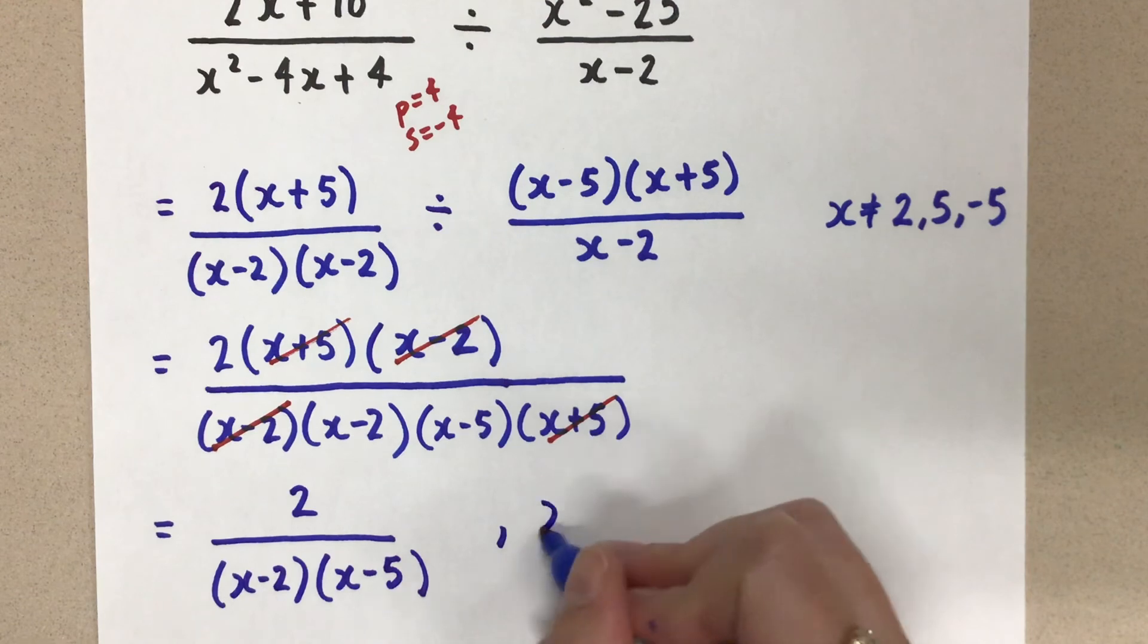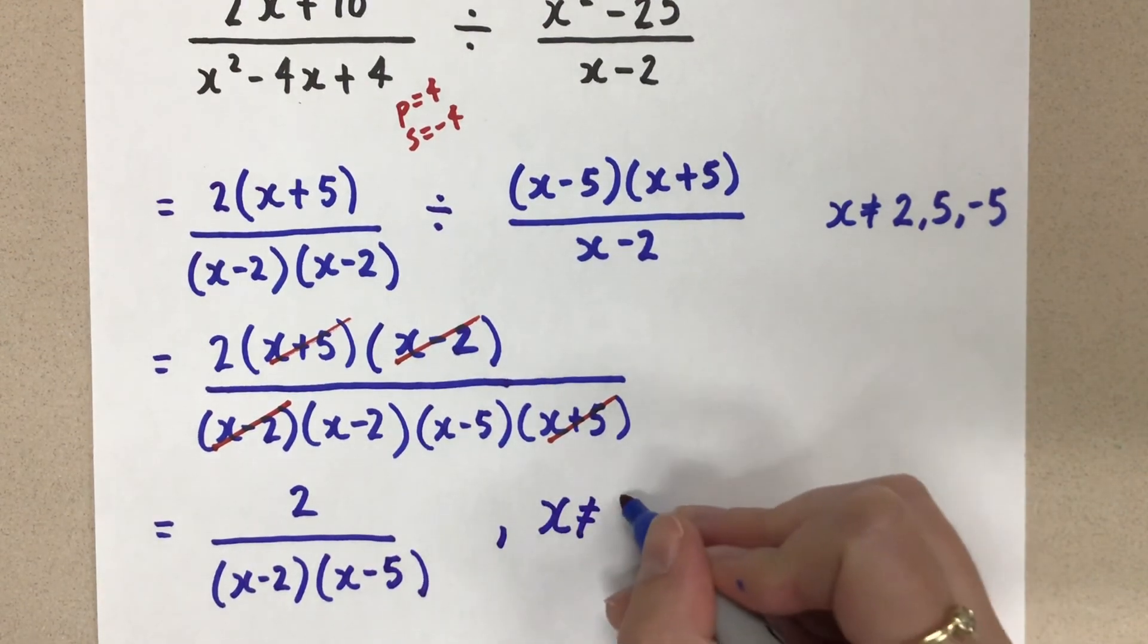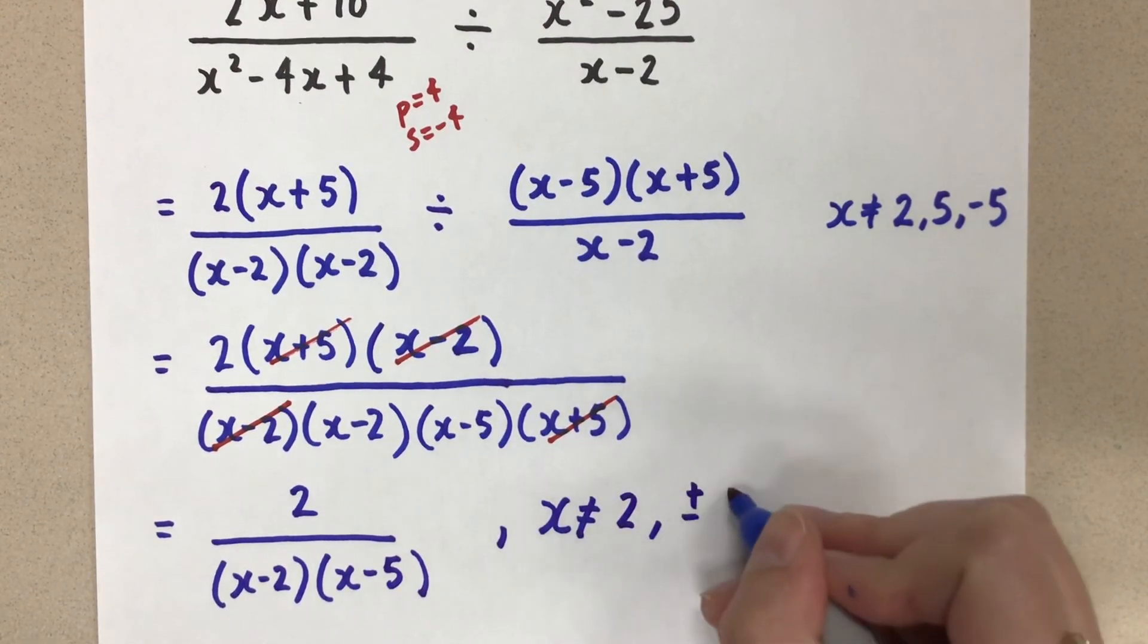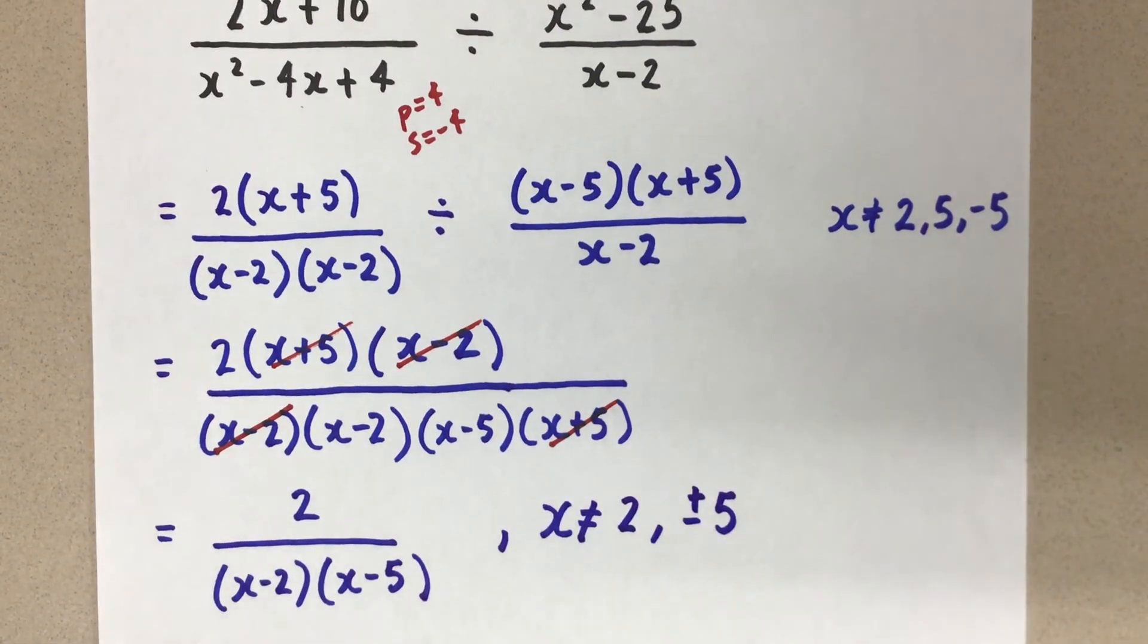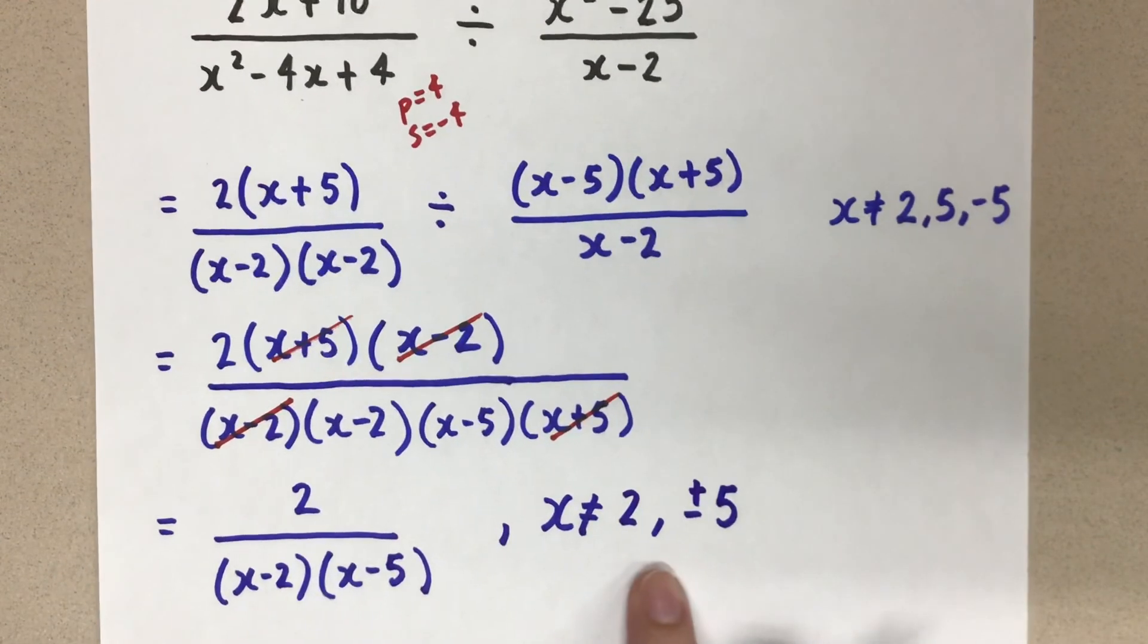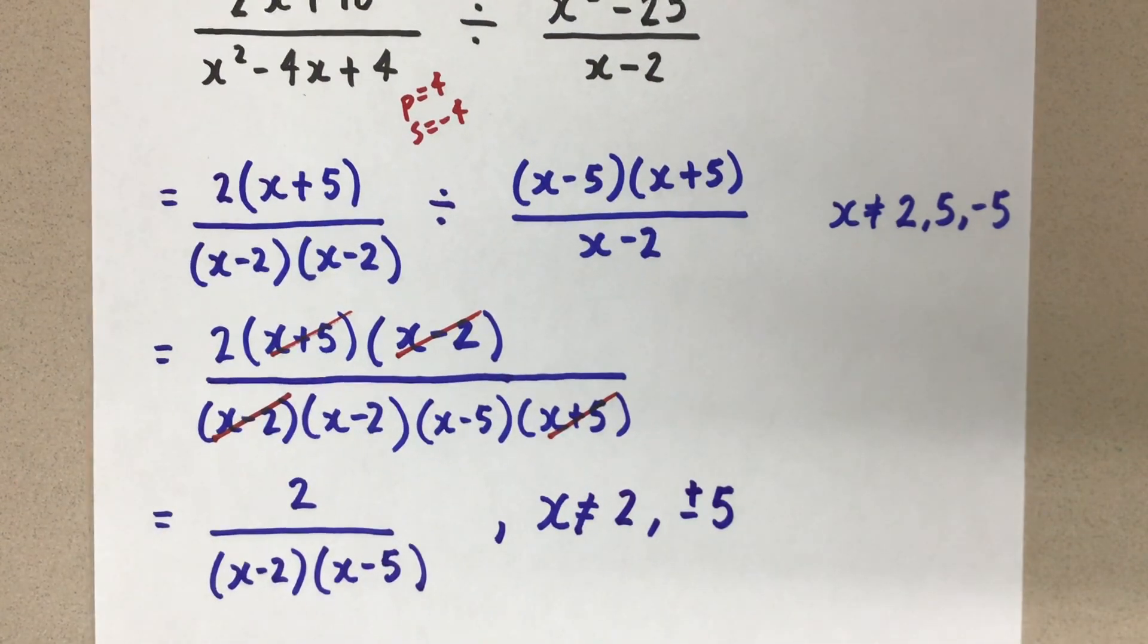Don't forget the restrictions here. x cannot be equal to 2 and positive and negative 5. That's our final answer. We make sure we have the restrictions. For this denominator, you could expand if you want to, but there's no need to expand. We can leave it just like this.